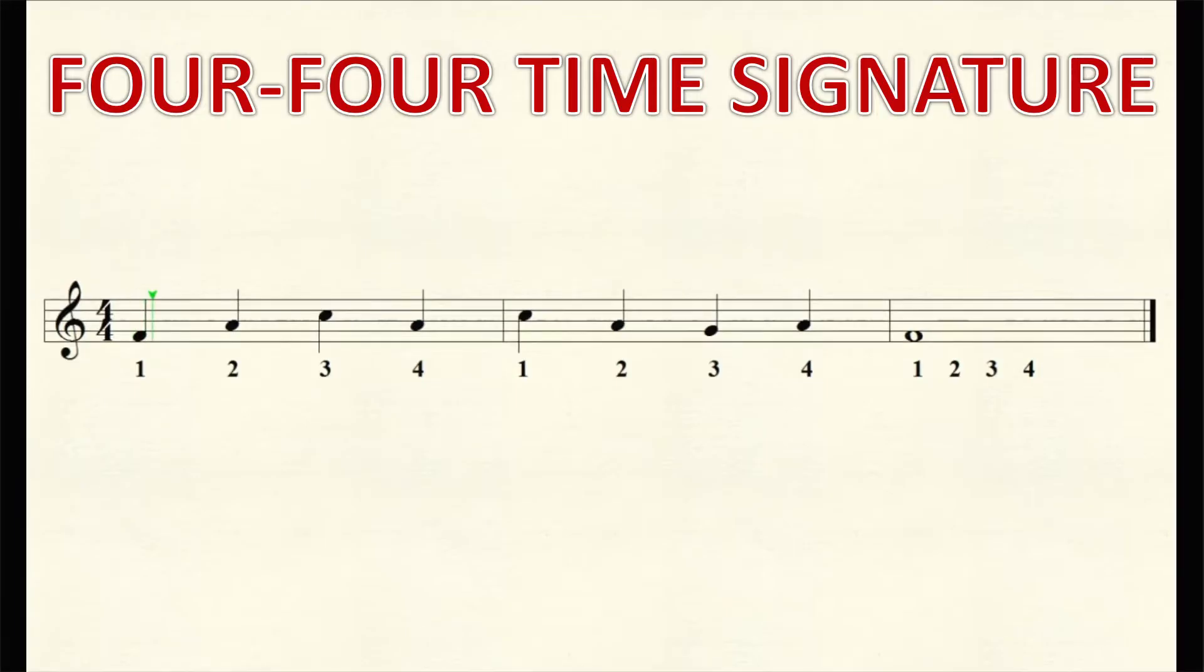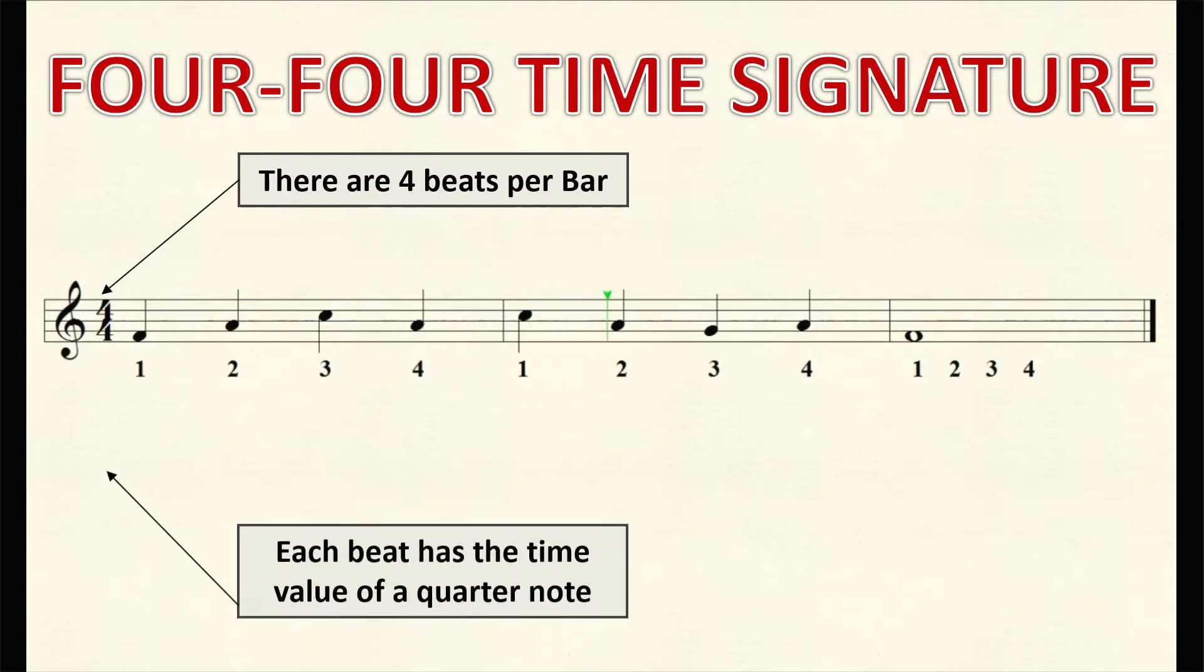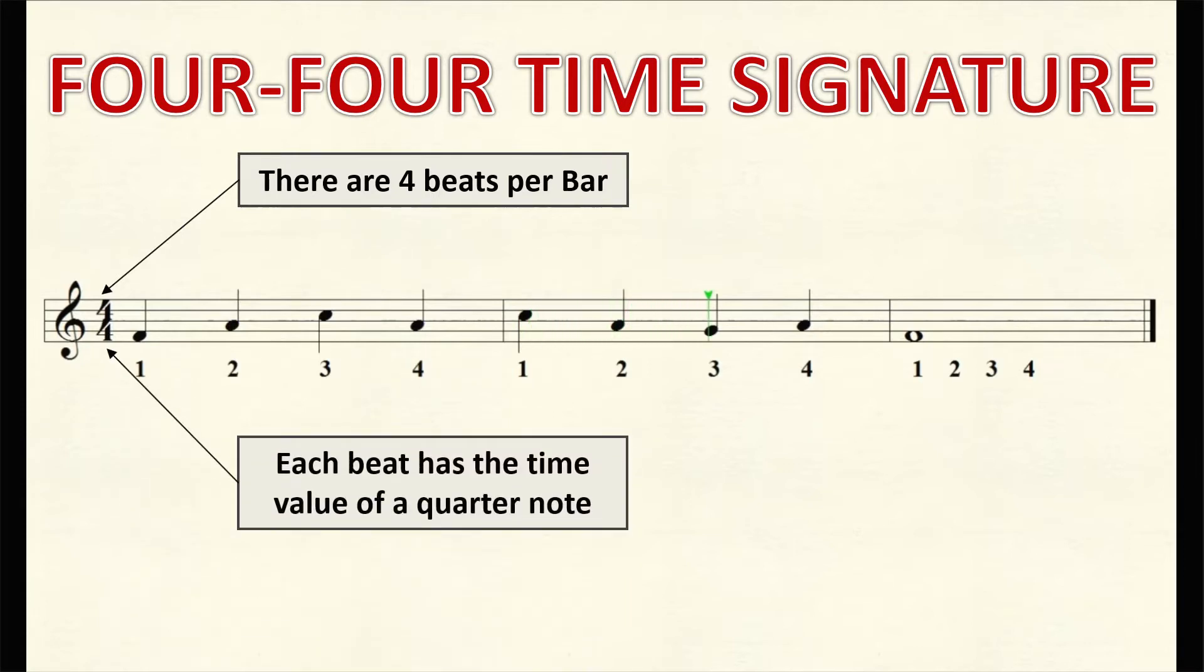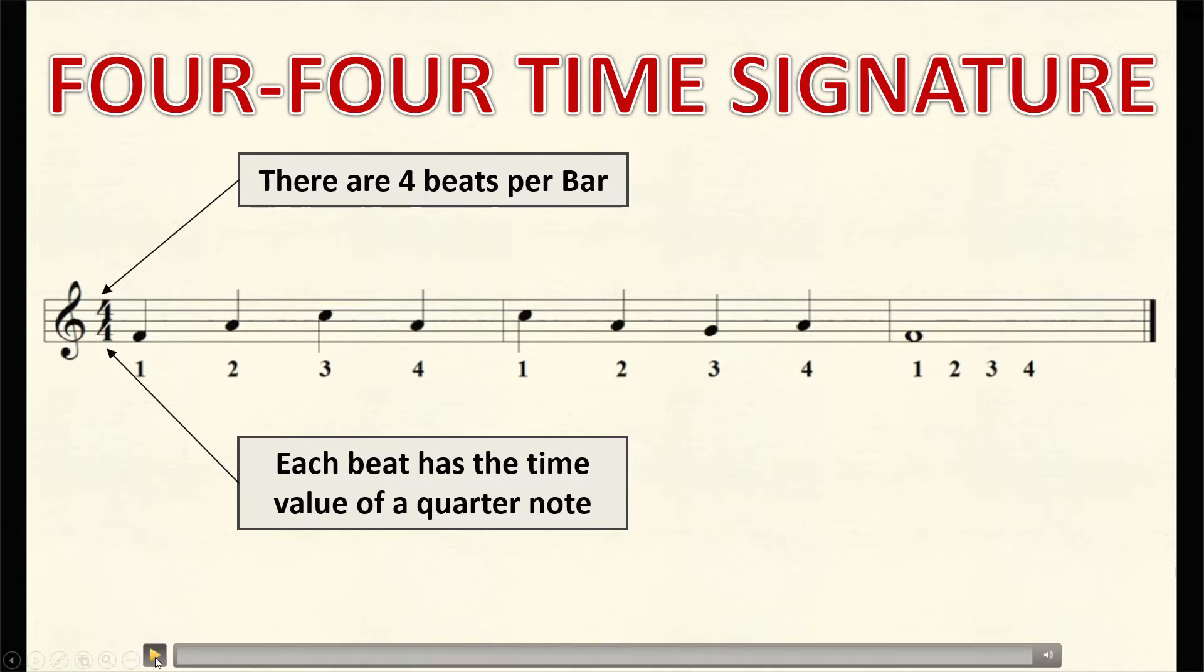Remember the 4-4 time signature? The top number 4 tells the musician that there can only be a maximum of 4 beats in one bar or measure. Again, the bottom number 4 tells the musician that each beat has the time value of a quarter note. In the previous section, we studied a few combinations that can be drawn from this time signature. In our simplified example here, I want you to practice counting using a quarter note for every beat in the first and second bars and a whole note in the third bar.